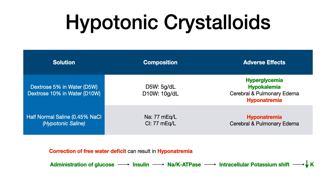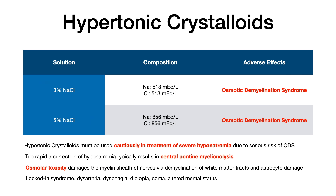That's really all you need to know for hypotonic crystalloids. Let's conclude by looking at hypertonic crystalloids — not a whole lot to know here. This is your 3% sodium chloride or your 5% sodium chloride. Don't worry about the compositions. Really the only thing to know here is that the adverse effect is potentially osmotic demyelination syndrome. Any time you correct severe hyponatremia with a hypertonic crystalloid, you must do this very, very cautiously because there's a serious risk of osmotic demyelination syndrome.